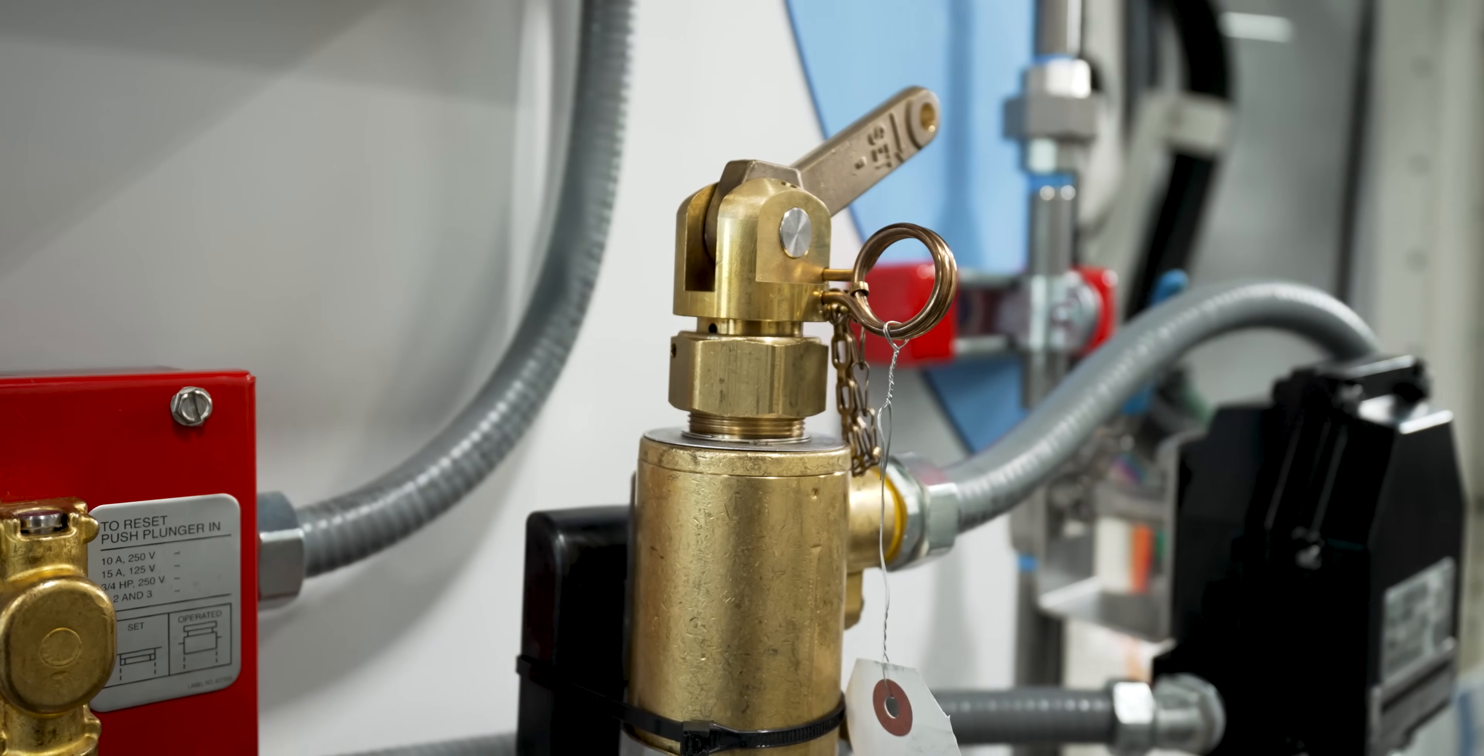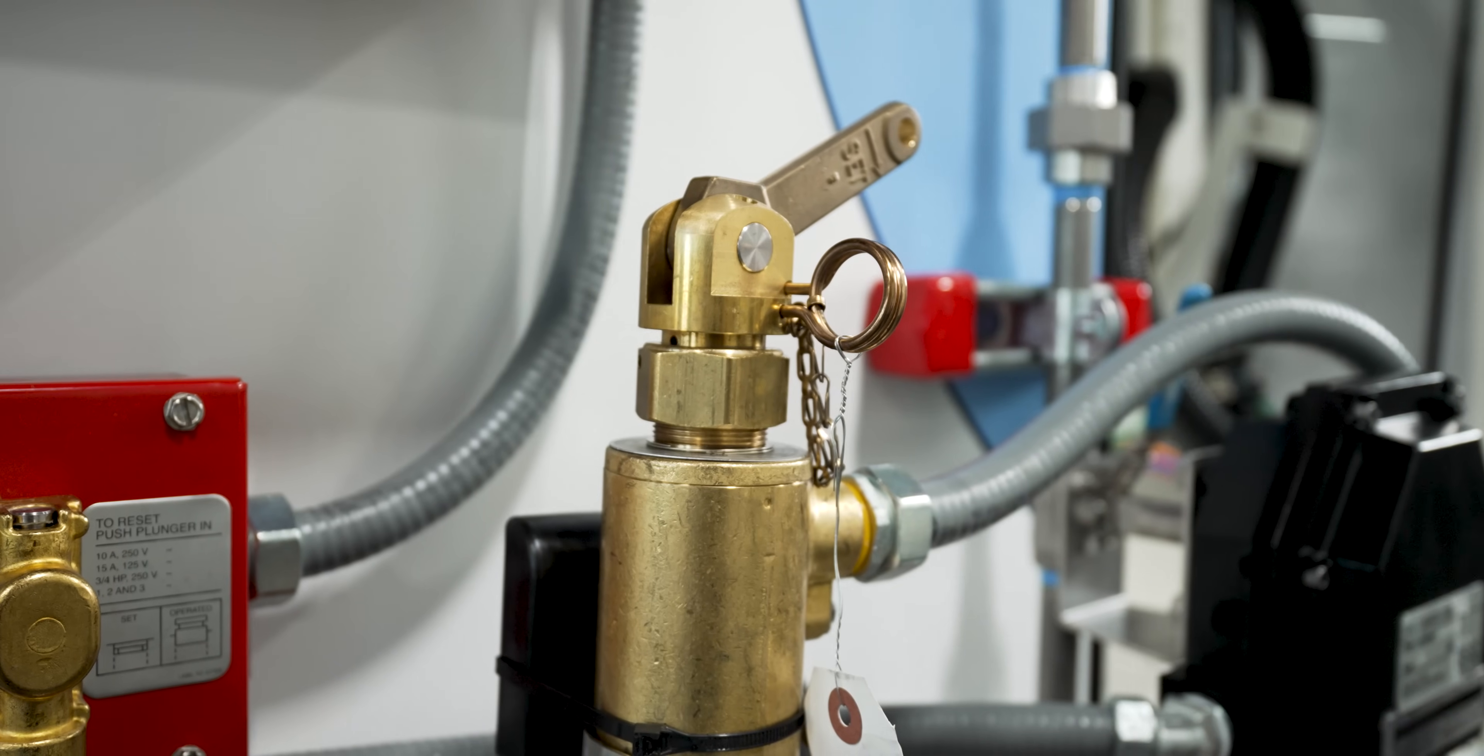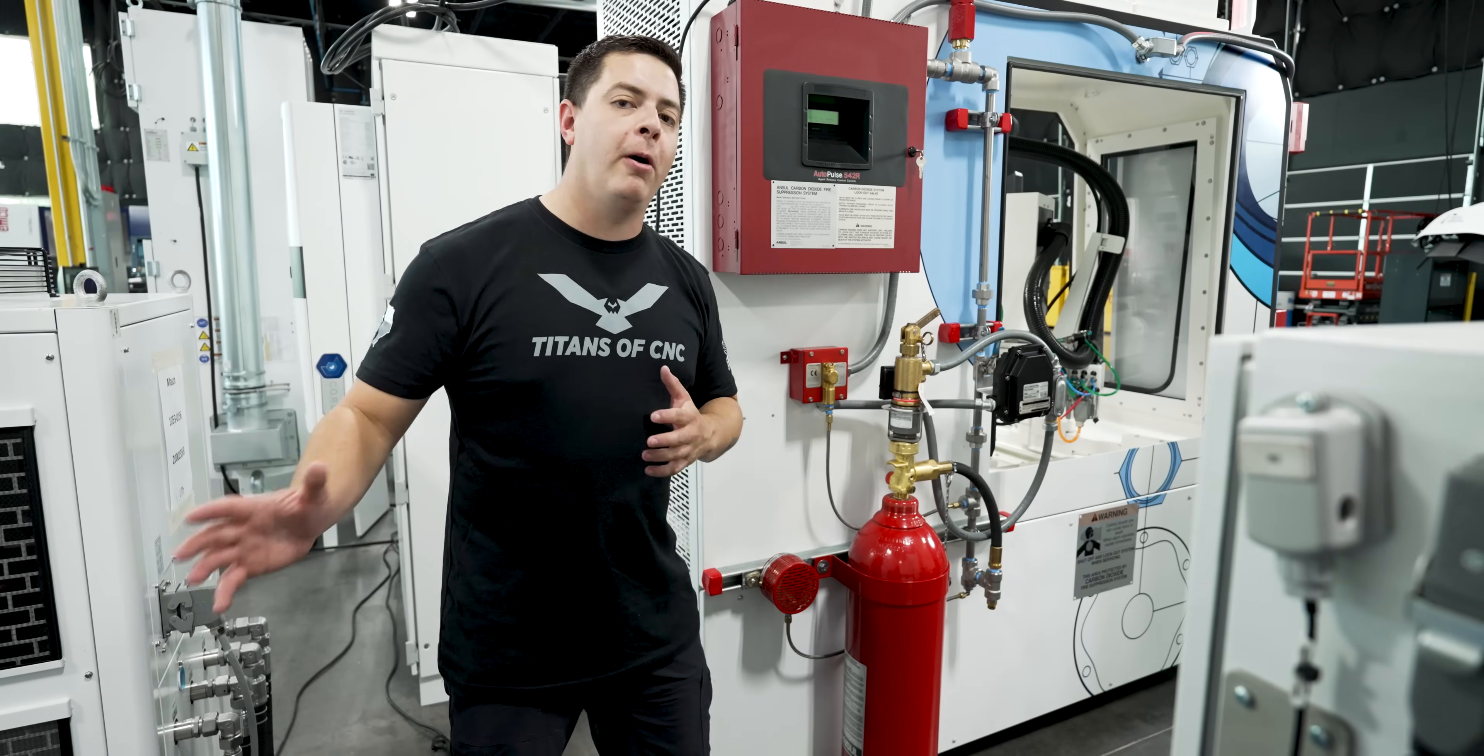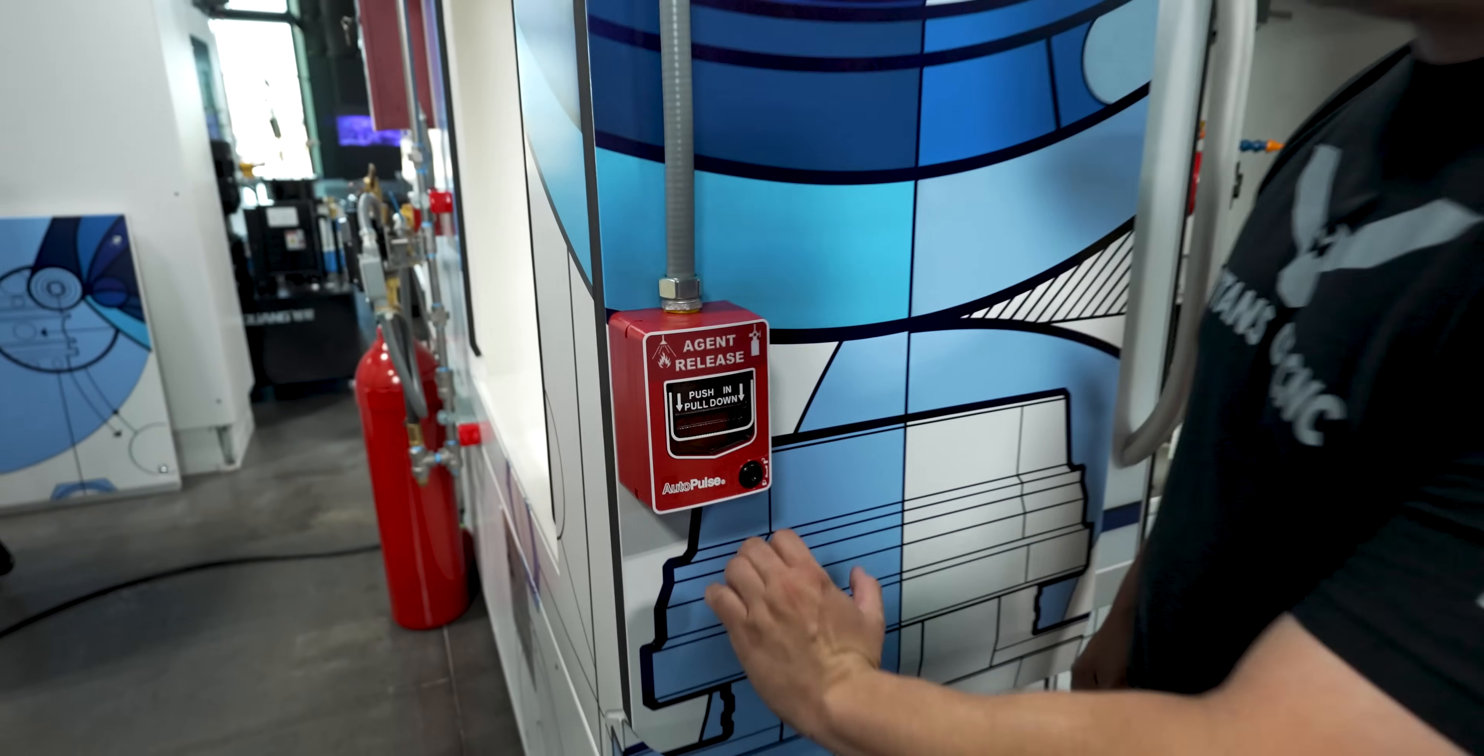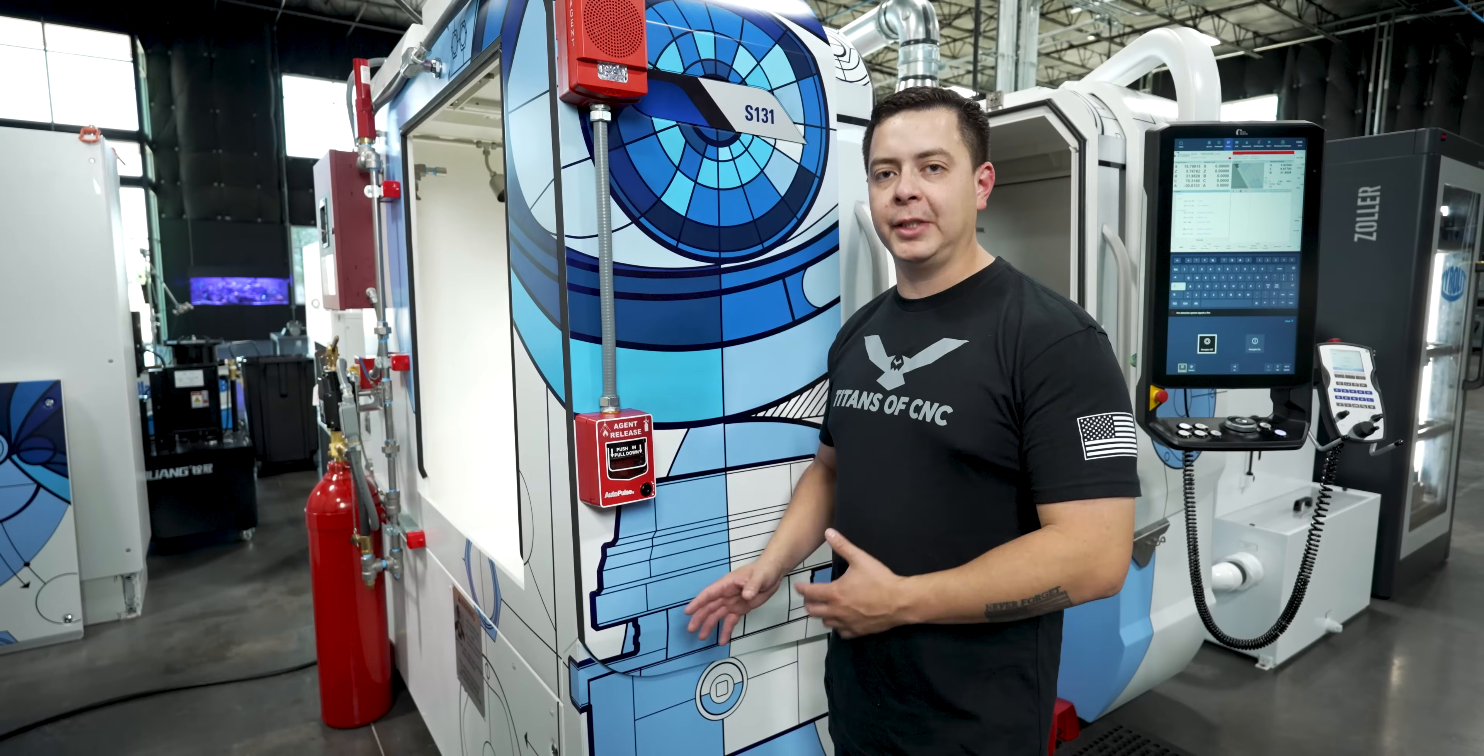So on the tank itself you have a mechanical safety meaning that if the heat probe doesn't go off you can actually pull this pin like a grenade and slam this lever down and expel all that gas. On the front of the machine you have another mechanical safety meaning that if the heat probe doesn't go off you can pull this lever down and it would expel that gas extinguishing those existing flames.